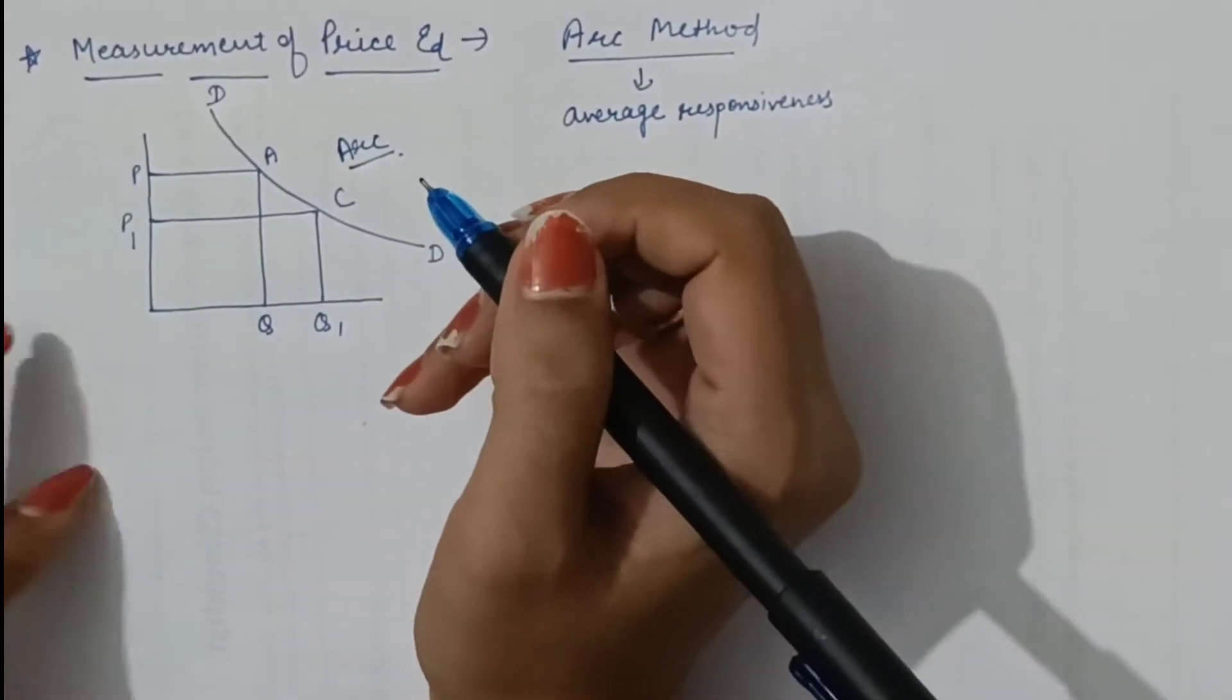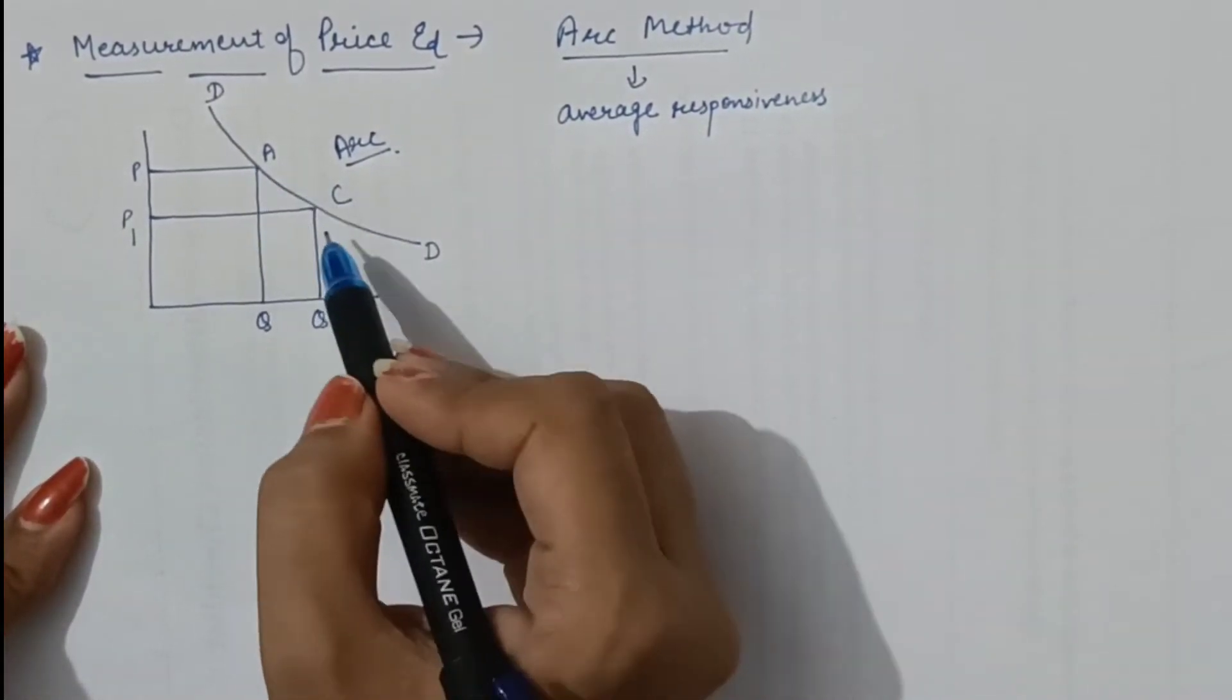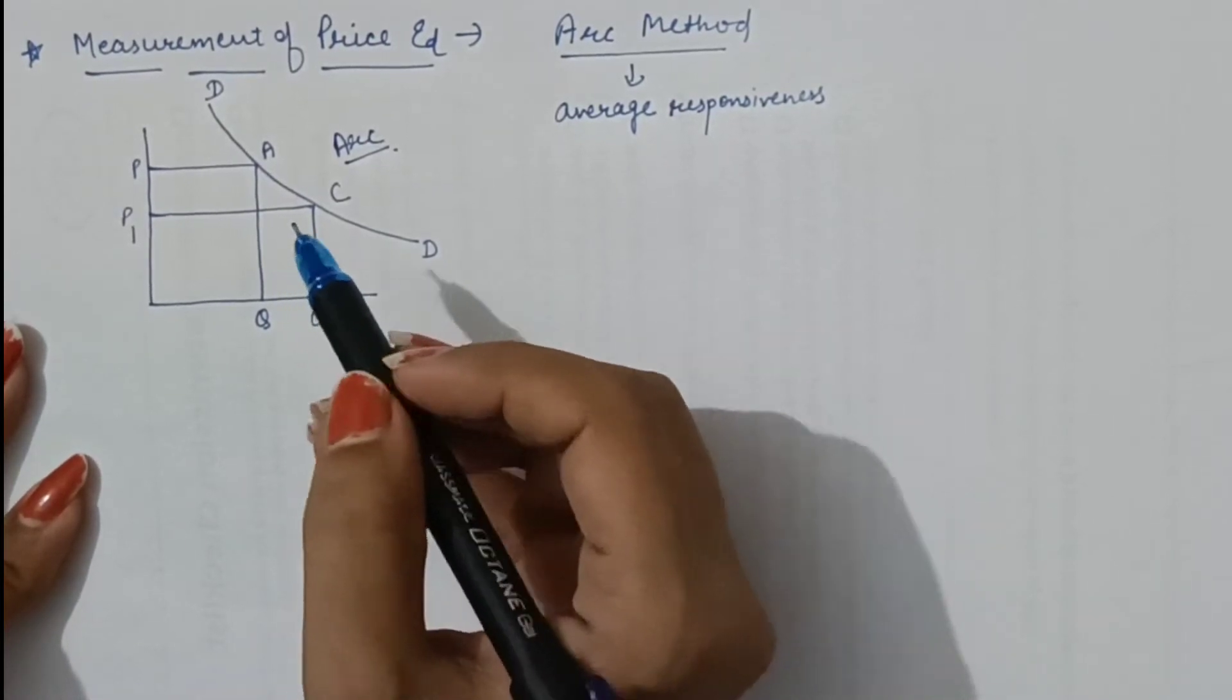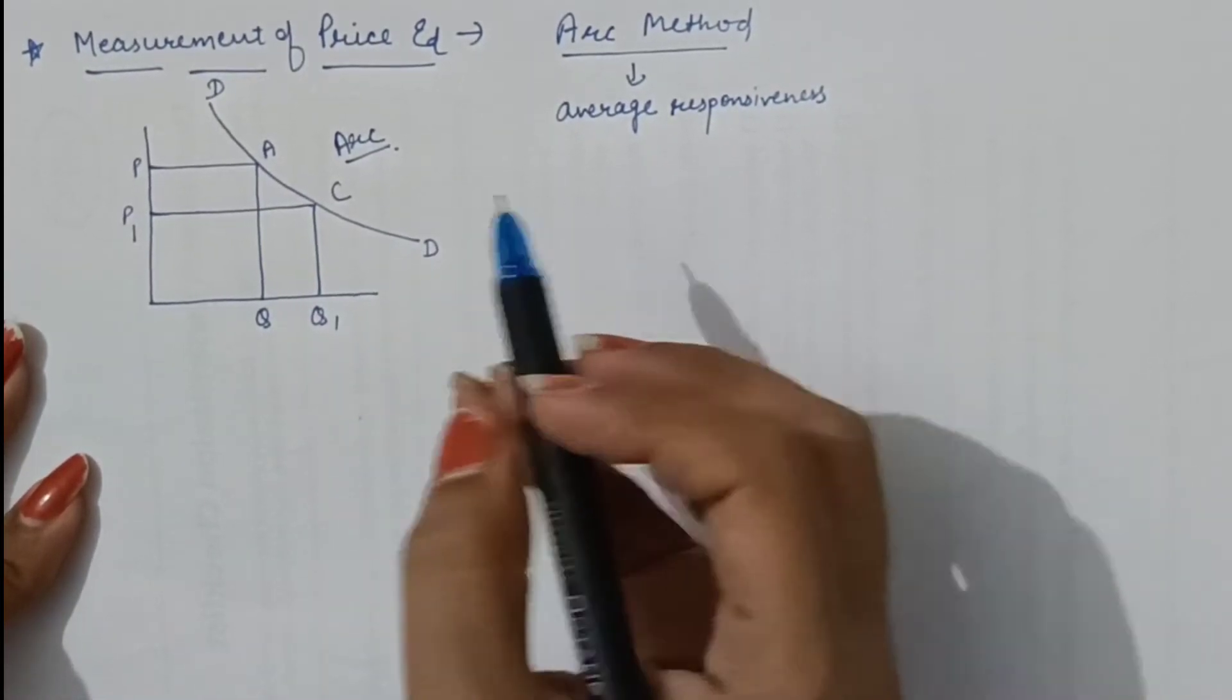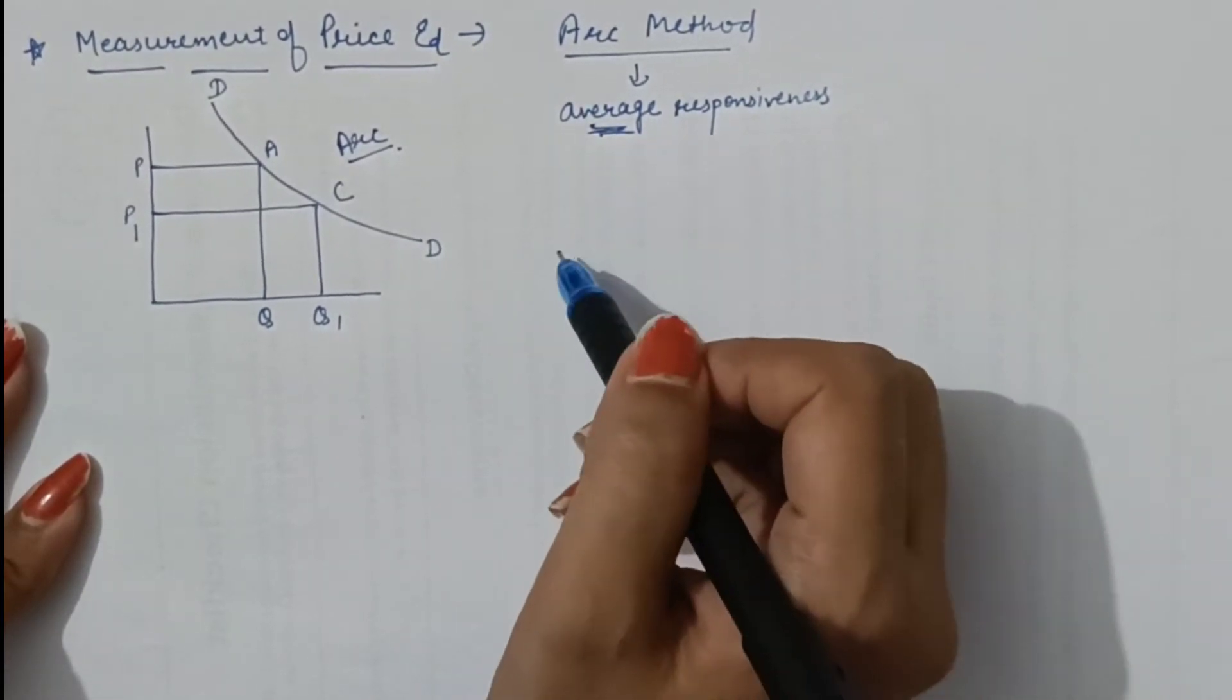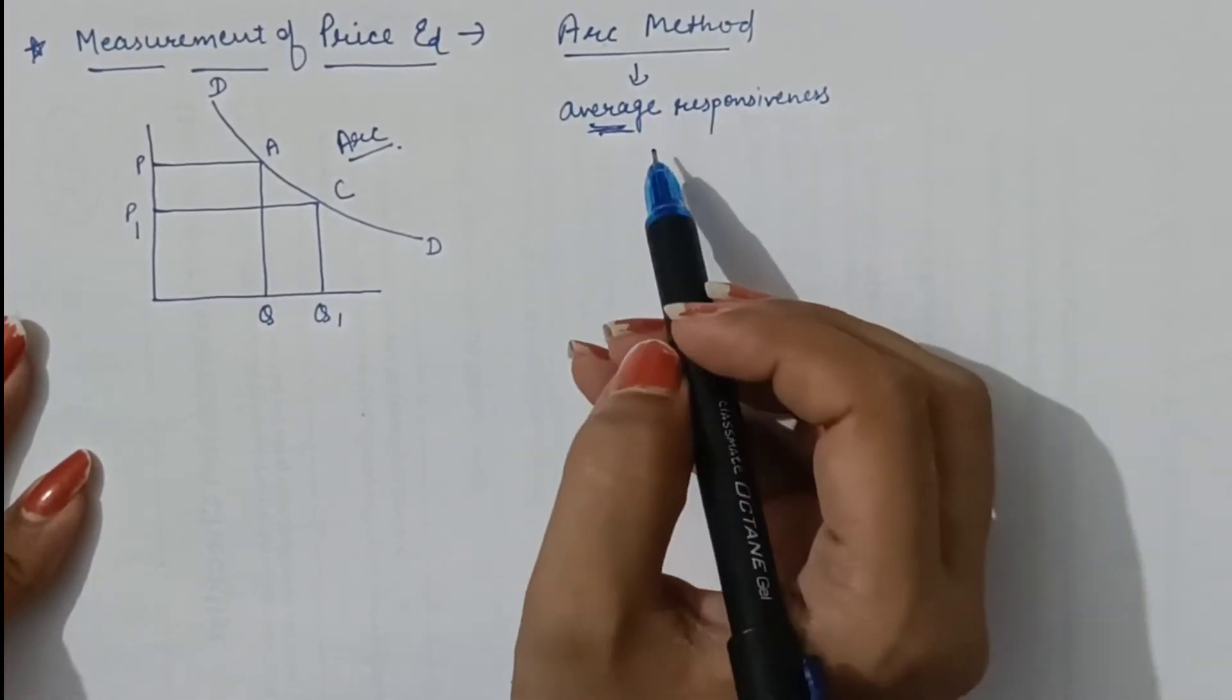So, what is an ARC? ARC is the portion between two points on a demand curve. Elasticity obtained when midpoint or average price and quantity are used is known as ARC elasticity.